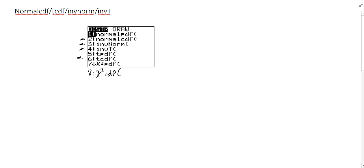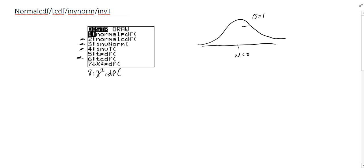What we're working with on inverse norm and normalCDF is a normal distribution — that nice bell-shaped curve. Typically we're looking at the standard normal distribution, where the mean is equal to zero and the standard deviation is equal to one. When we calculate a z-score, we've converted from some other normal distribution to this standard normal. This is a probability distribution where the total area under the curve equals one.